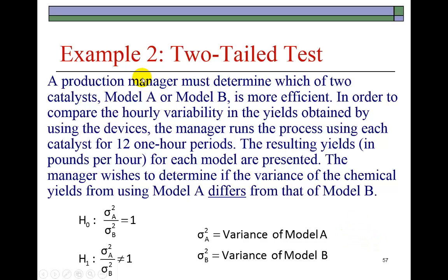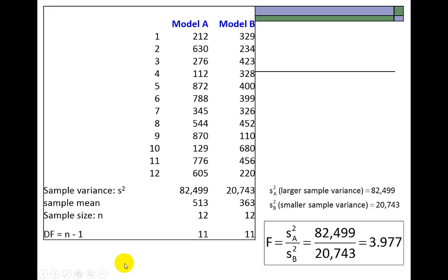Next example. Production manager must determine which of two catalysts, model A or model B, is more efficient in order to compare the hourly variability in the yields obtained by using the devices. The manager runs the process using each catalyst for 12 one-hour periods. The resulting yields for each model are presented. The manager wishes to determine if the variance of the chemical yields from using model A differs from that of B. Key word, differs. So, we know it's going to be a two-tail test. Two-tail test, test of equality.